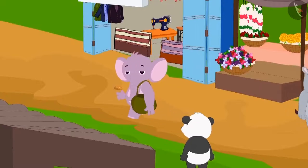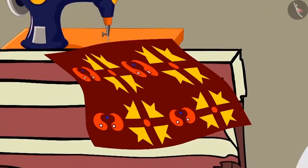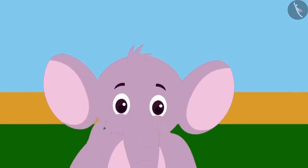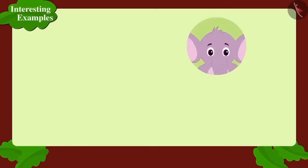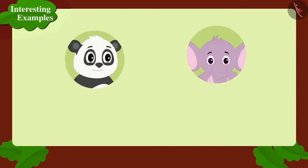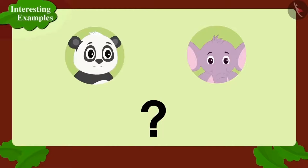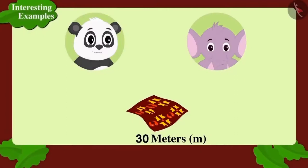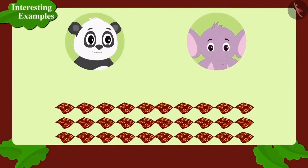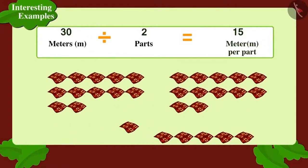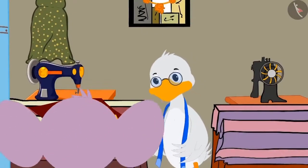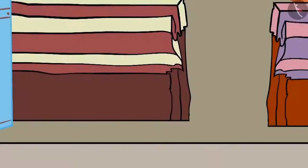Then Appu went to Badbole Chacha's shop and bought a 30-metre long piece of fabric. On his way back, Appu thought he and his best friend Golu would get similar shirts stitched. Appu will have to divide the 30 metres of fabric into 2 equal parts. Dividing 30 into 2 equal parts gives 15 metres each. Appu got the fabric cut into 2 parts of 15 metres each and gave one part to Golu, who was delighted.